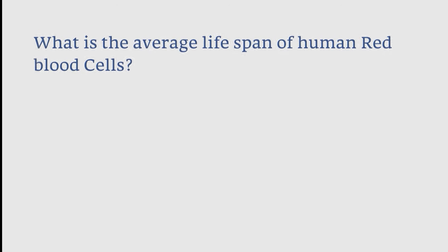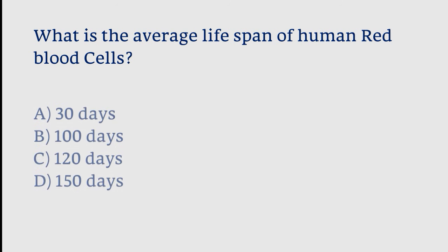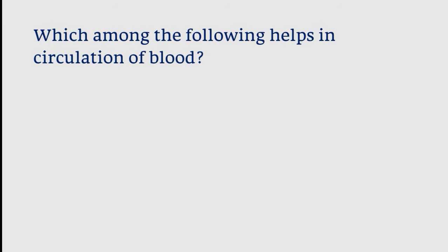What is the average lifespan of human red blood cells? Options: 30 days, 100 days, 120 days, 150 days. The correct answer is option C. The average lifespan of human red blood cells is about 120 days.